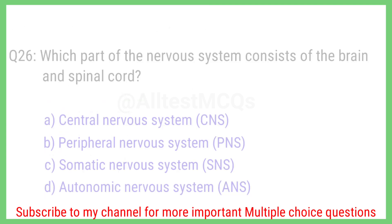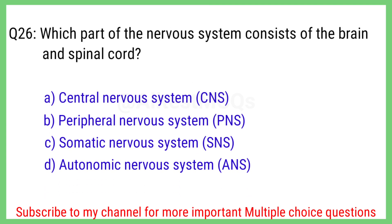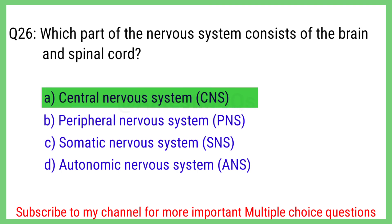Question number 26. Which part of the nervous system consists of the brain and spinal cord? The correct answer is option A. Central nervous system.